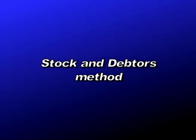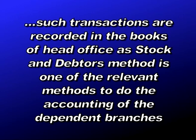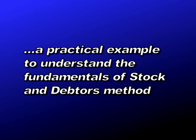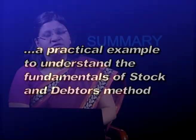With this we are ending today's lecture. We have learned in detail the stock and debtors method, all related journal entries, and the important accounts prepared to find the results of branch operations. Such transactions are recorded in the books of the head office, as stock and debtors method is one of the relevant methods for accounting of dependent branches. In an upcoming lecture, we will take up a practical example to understand these fundamentals more clearly.